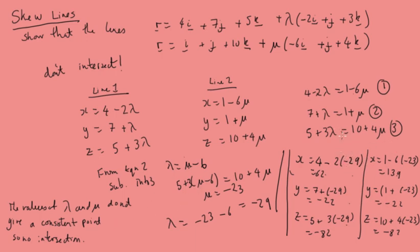If you're investigating two lines to find if they're skew or intersecting, and the x coordinates match, don't assume that means they are intersecting. As we see in this example, only the x coordinates don't match — the y and z coordinates do match. So if x and y match, z might still not match and the lines would be skew. Go through all the steps and don't cut off early thinking you're done.